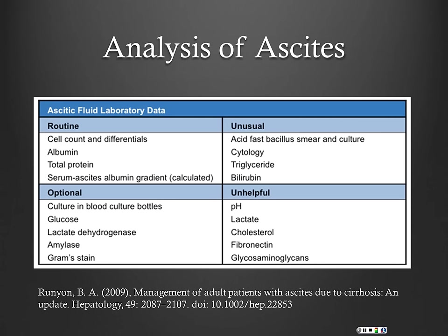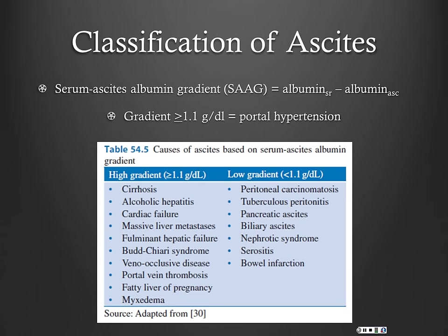You can look for mycobacterium, do cytology, triglycerides, and so on. But unless you have good suspicion for peritoneal TB or peritoneal carcinomatosis, those are low yield. If their total protein comes back high and their SAAG is low — suggesting it's not cirrhotic — then you can go back and do some of these additional tests.